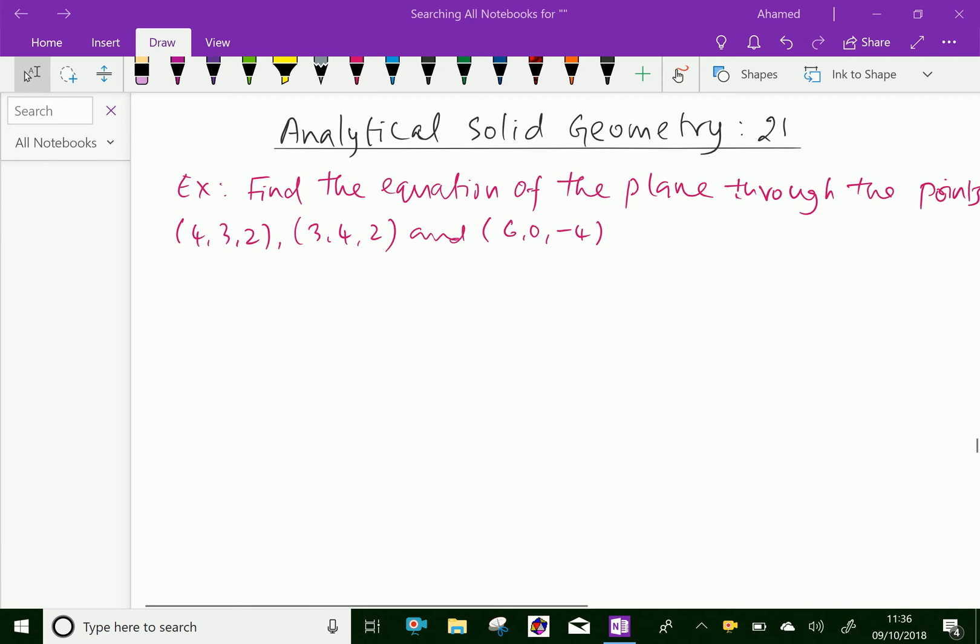Welcome to amineacademy.com. In analytical solid geometry, let us do some example problem regarding equation of the plane. Look at this example. Find the equation of the plane through the points (4,3,2), (3,4,2), and (6,0,-4).